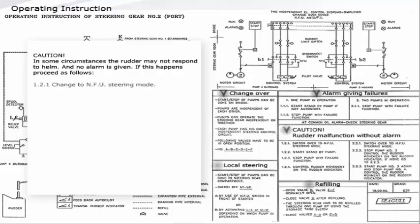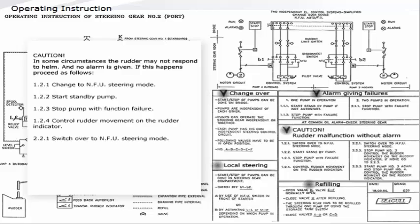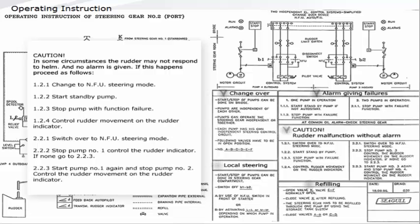If this happens proceed as follows: 1.2.1 Change to non-follow-up steering mode, start standby pump, stop pump with function failure, control rudder movement on the rudder indicator. 2.2.1 Switch over to non-follow-up steering mode, stop pump number 1, control the rudder indicator. If none, go to 2.2.3: Start pump number 1 again and stop pump number 2, control the rudder movement on the rudder indicator.